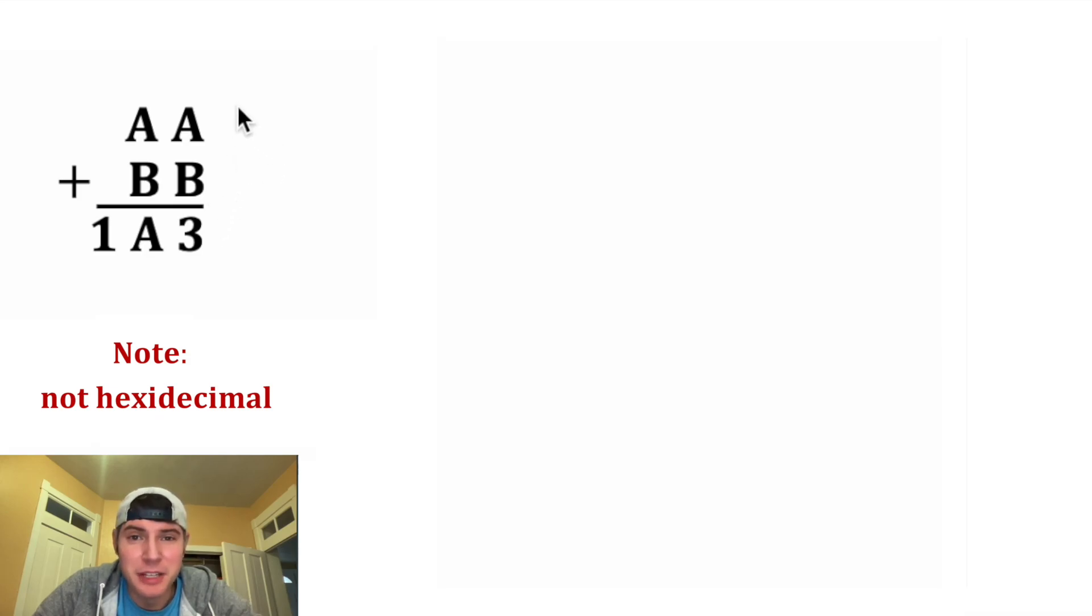Now we're trying to solve for A and B so that this plus this equals this. We probably could guess and check, but I want to see if we can figure it out logically. Since the A plus B gives us a 3 in the ones spot, we know that either A plus B equals 3 or A plus B equals 13.